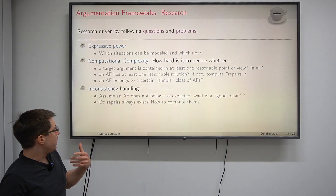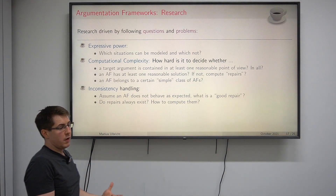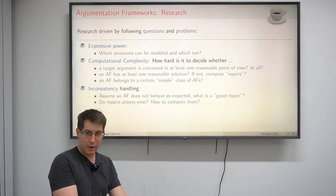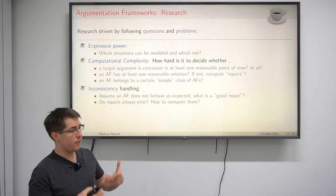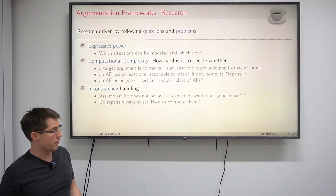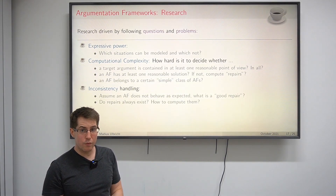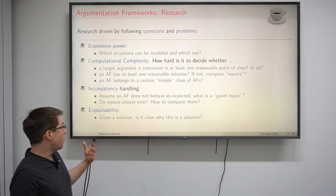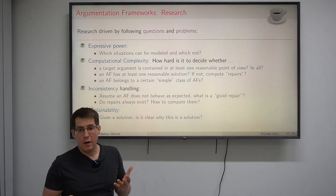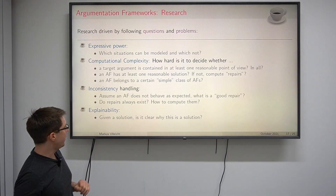We also have research about inconsistency handling. Suppose we have an argumentation framework for a certain situation and we think we modeled everything correctly, but it does not behave the way we want. What is a good repair in these situations? Do repairs always exist, and if so, how can we compute them? Finally, what about explainability? Given a certain solution, is it clear why this is a solution?